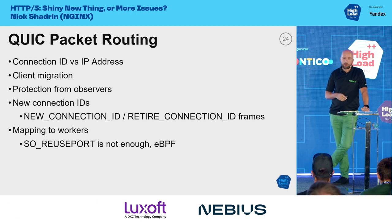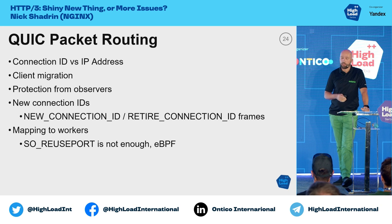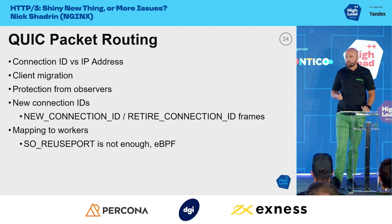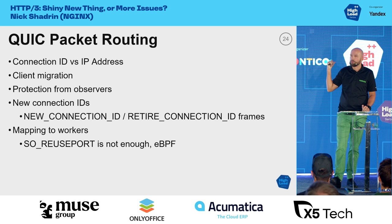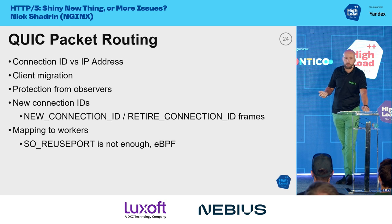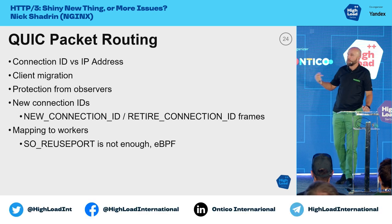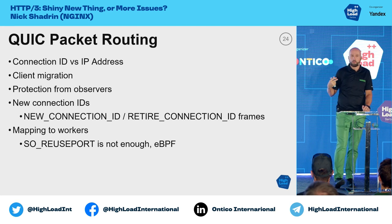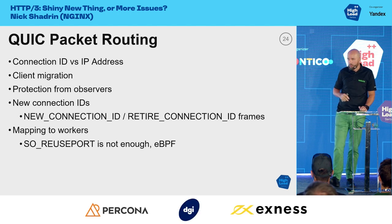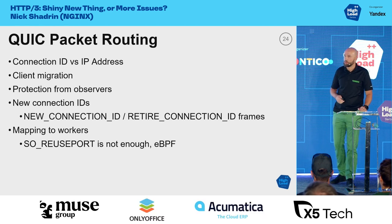The Connection ID concept enables potential client migration. An example: you're downloading something, walk outside, your Wi-Fi disappears and you switch to 4G or 5G. In the ideal world, you'd still be sending the same Connection ID, and that client would migrate from Wi-Fi to 4G without a problem. I haven't seen that in practice yet, but I hope it shows up at some point.